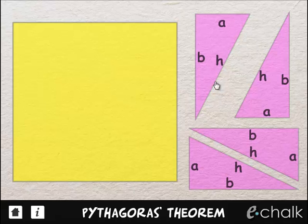And we've marked on the hypotenuse, H, and the other two sides, A and B.